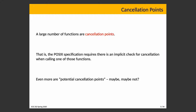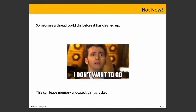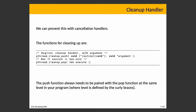Sometimes a thread is going to die before it has cleaned up — either as a result of cancellation points or asynchronous cancellation. A thread might be terminated before it's had a chance to clean things up. If it was supposed to deallocate memory at the end, cancellation means the memory is not deallocated. If it has a resource locked, it doesn't necessarily get unlocked. If a process with a file open is killed, the OS releases the file, but that doesn't happen when a thread dies — the file remains open in the process.